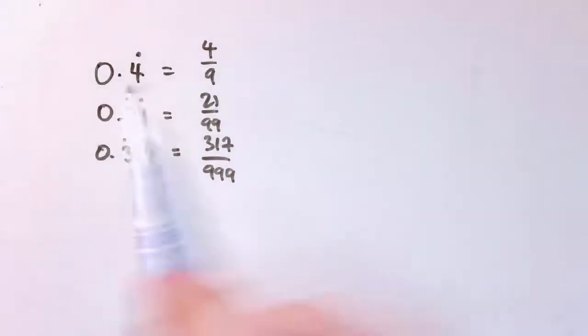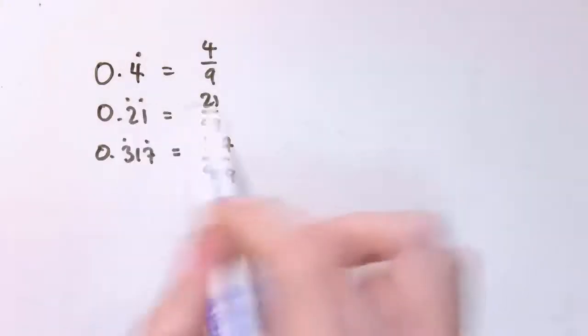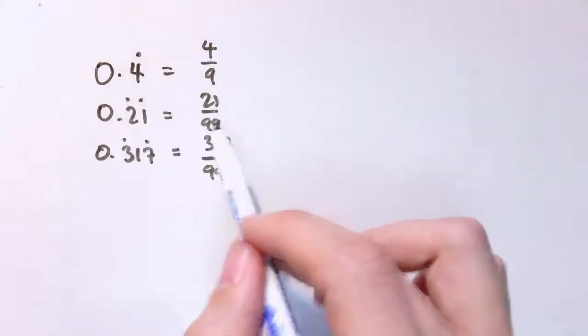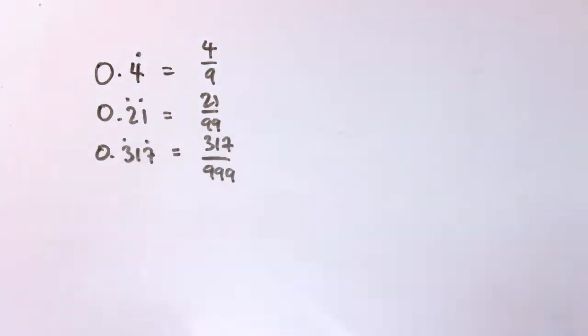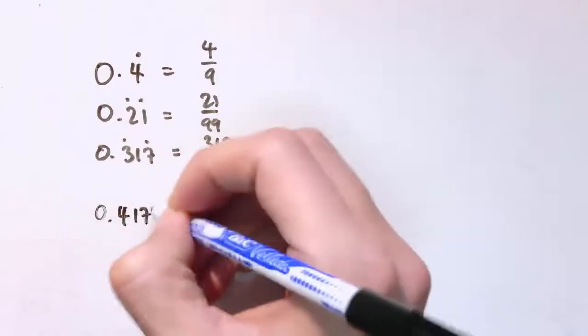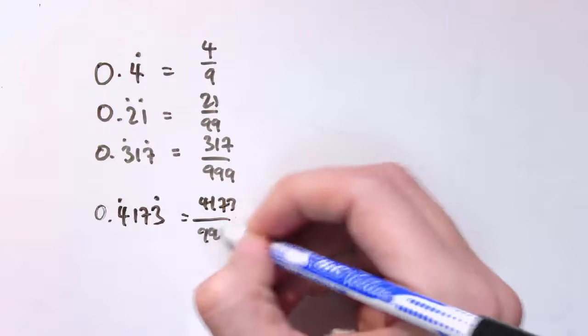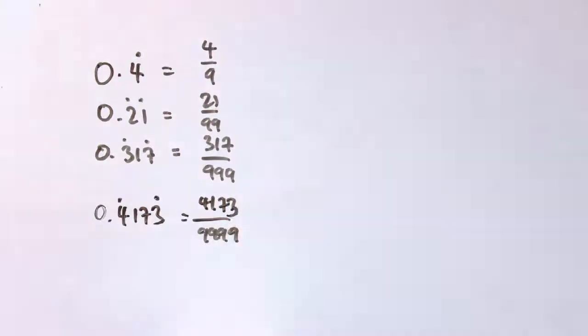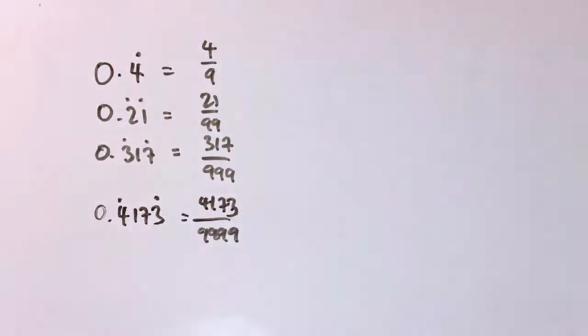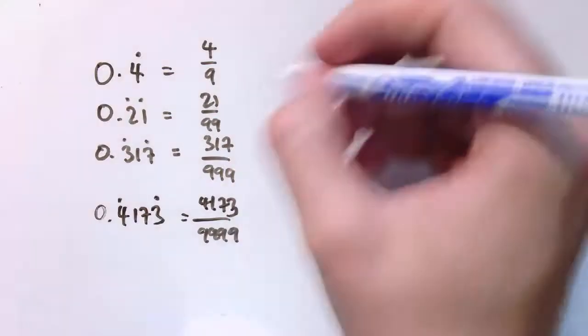Although you should do that for your exams if that's what's required, just notice that if you've got 0.4 recurring, that's 4 ninths. If it was 0.something else recurring, that would be that many ninths. Similarly, if it's 0.point something with two dots, then that's over 99. If it's something with three dots, it's that something over 999.